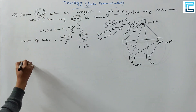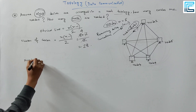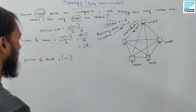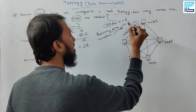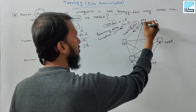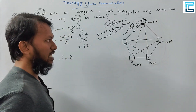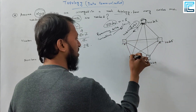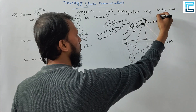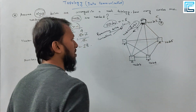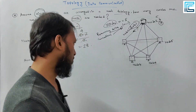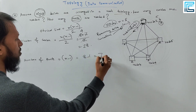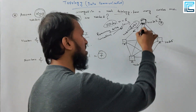The number of ports per device is n-1, which equals 7 ports. Why? Because the remaining devices a node connects to equals n-1. The total number of ports is n times (n-1). The number of cables follows the formula n(n-1)/2. So total load is calculated accordingly.